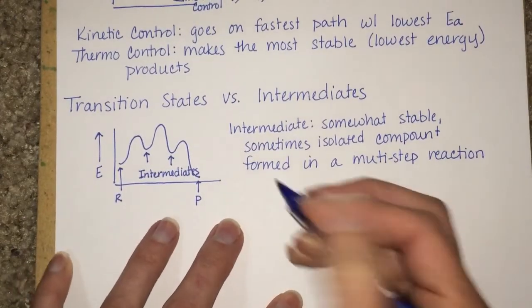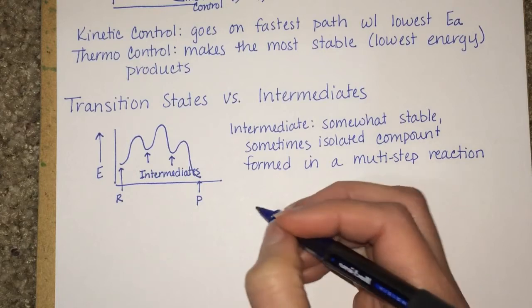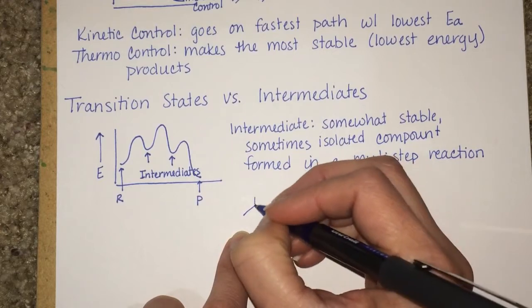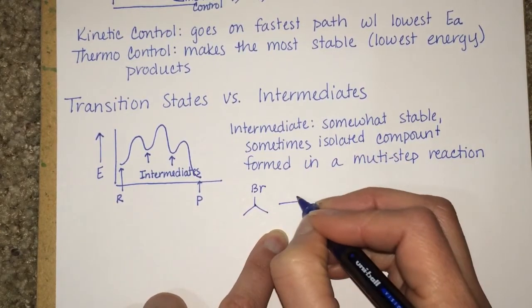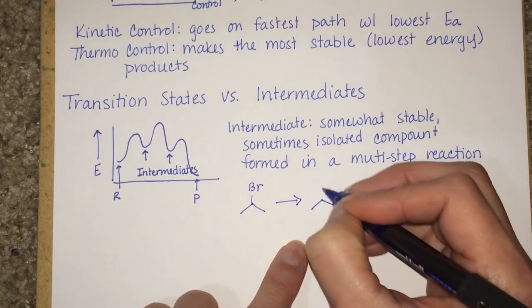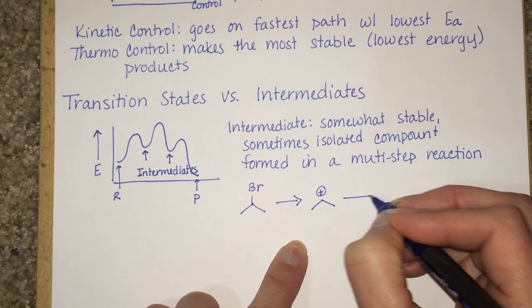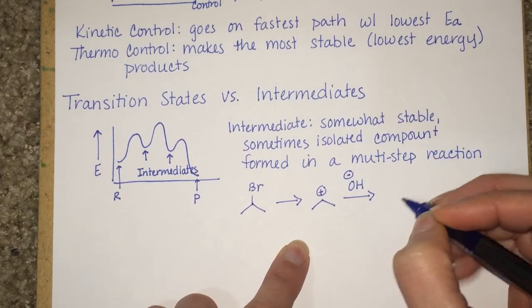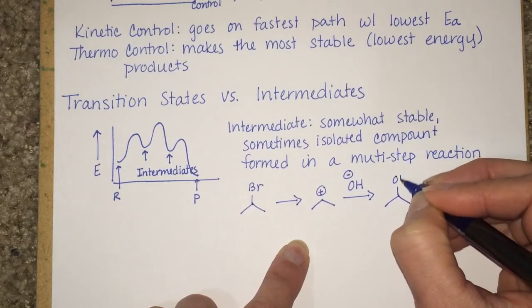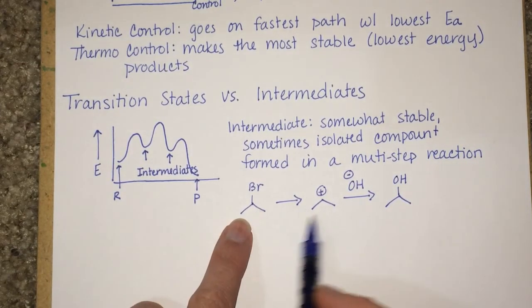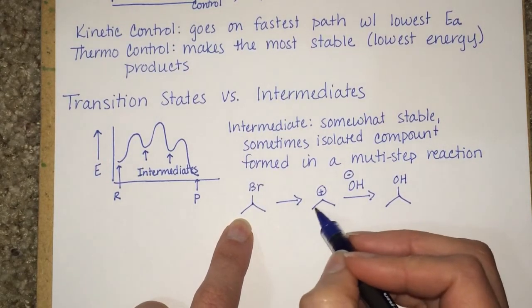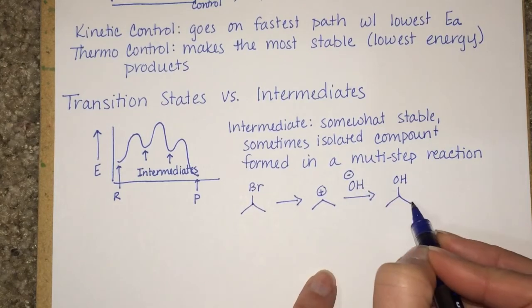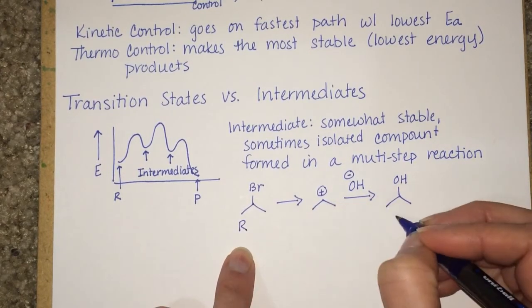One example of an intermediate would be this particular reaction, which also is not something that you need to memorize yet. It's a reaction that we'll be learning really soon. So this is a two-step reaction, where in the first step, the bromide falls off and produces this intermediate. And then in the second step, an OH group comes in and attacks and produces our product.